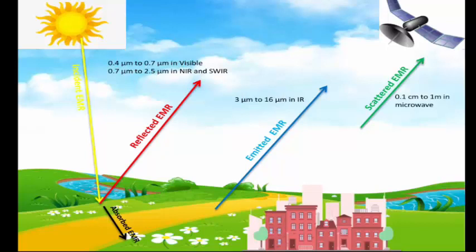Scattered electromagnetic radiation lies from 0.1 cm to 1 mm in the microwave region. So now the picture is clear: the electromagnetic radiation spectrum is divided into 7 regions. Gamma ray, X-ray, and ultraviolet are blocked by the earth's atmosphere. Then we have visible, infrared, and microwave, which can penetrate into the earth's atmosphere and are useful in remote sensing. We can have reflected electromagnetic radiation lying mostly in the visible to near IR and SWIR range, emitted electromagnetic radiation mostly in the thermal infrared region from 3 to 16 micrometers, and scattered electromagnetic radiation in the microwave region.